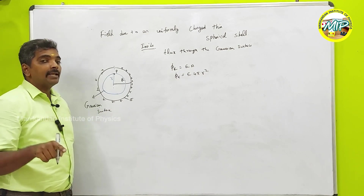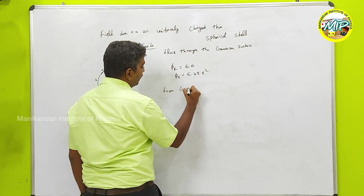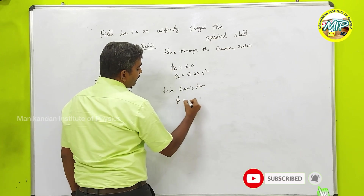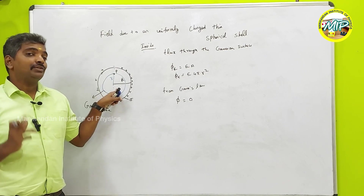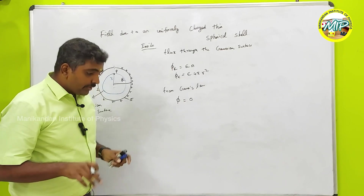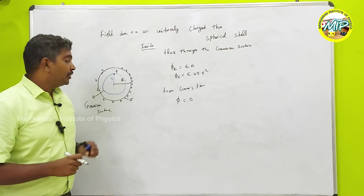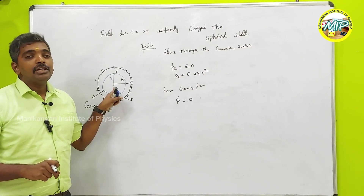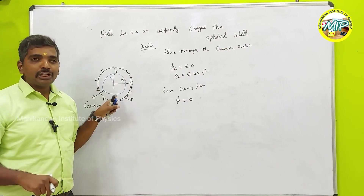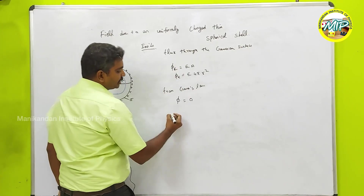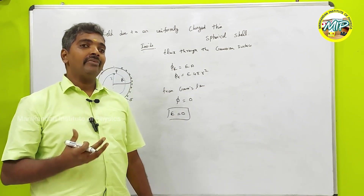From Gauss's law, the flux equals zero in this case. Why? Because inside the Gaussian surface there is no charge — the charge is only on the outer surface of the shell, which lies outside the Gaussian surface. When there is no charge enclosed by the Gaussian surface, the total flux is zero. If I equate the two expressions, my electric field is zero inside the spherical shell.